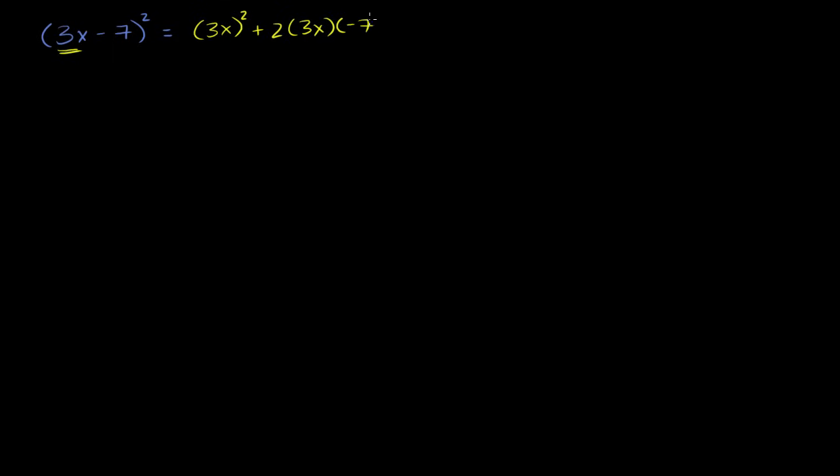times negative 7. Right? We know that is 2 times the product of these terms. plus negative 7 squared. And if we use our product rules here, 3x squared is the same thing as 9x squared. This right here, you're going to have a 2 times the 3, which is 6, times the negative 7, which is negative 42x. And then a negative 7 squared is plus 49.